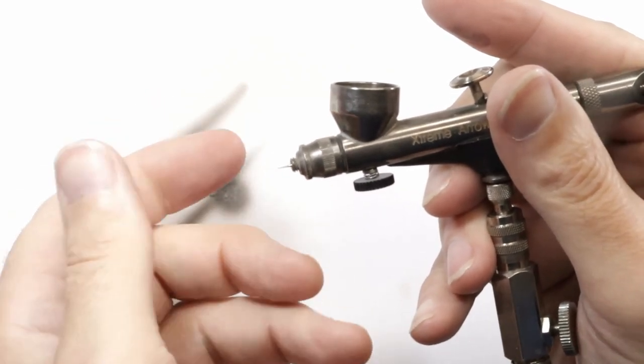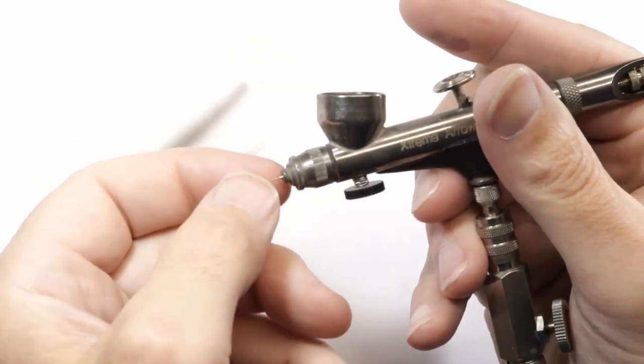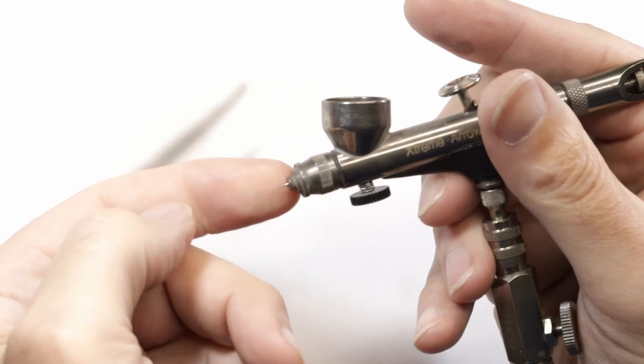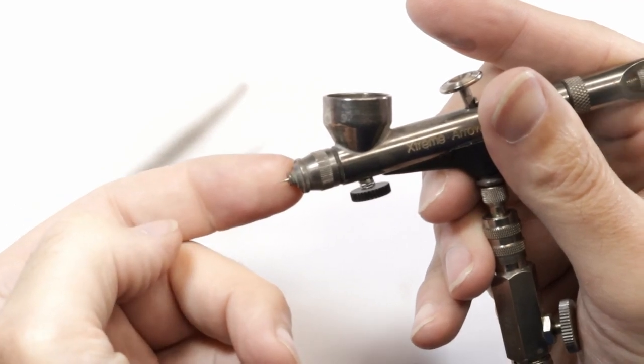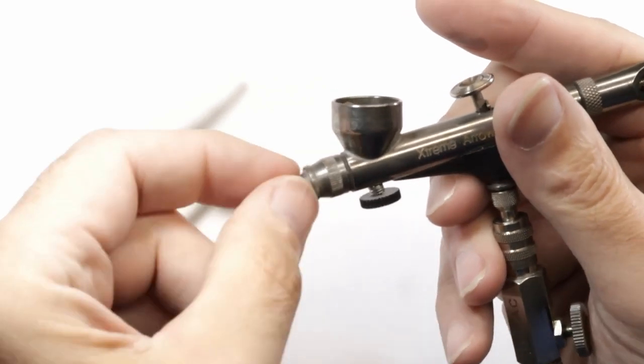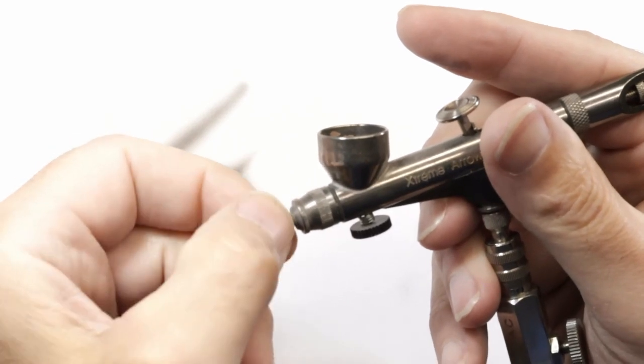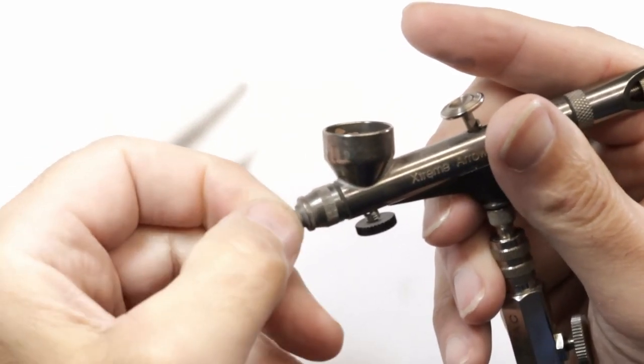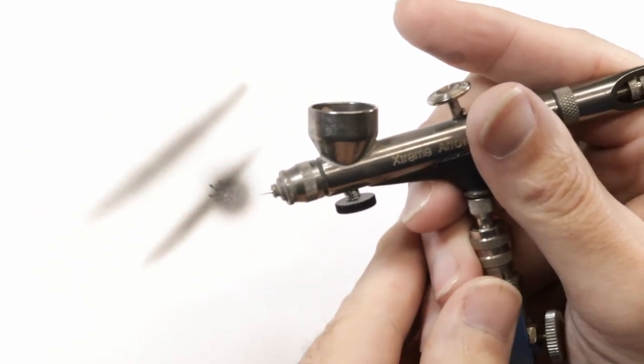The second thing is you do have to maintain the needle a lot. What I've done is I've taken the needle guard or needle cap off of this airbrush, which is what I do on most brushes. That way I can use my fingernails and just gently kind of clean off any dried paint, and that will help things run really smooth as well.